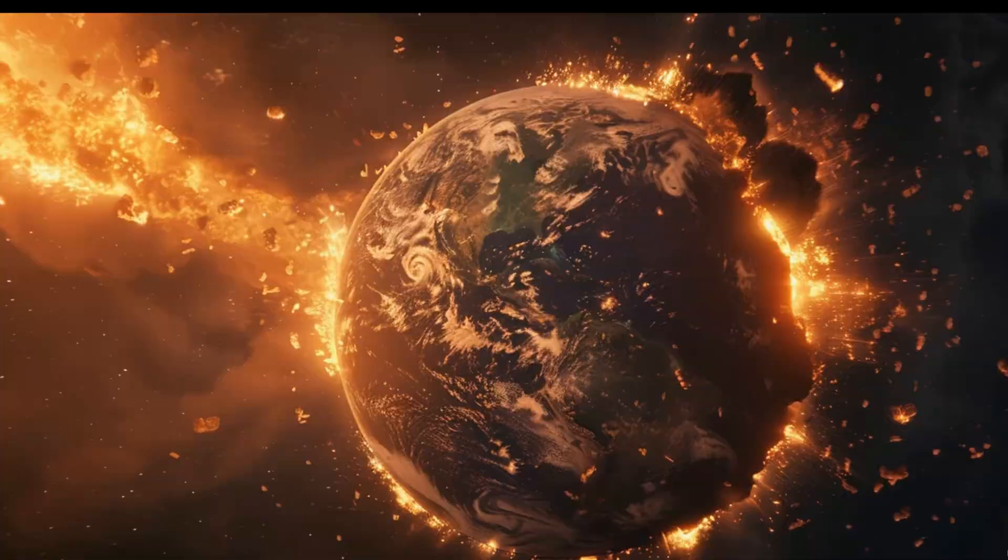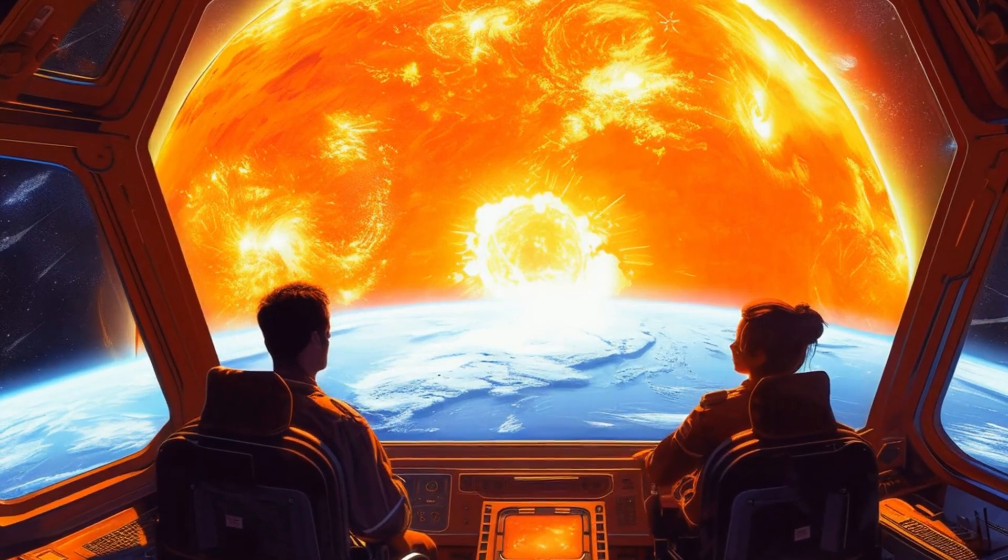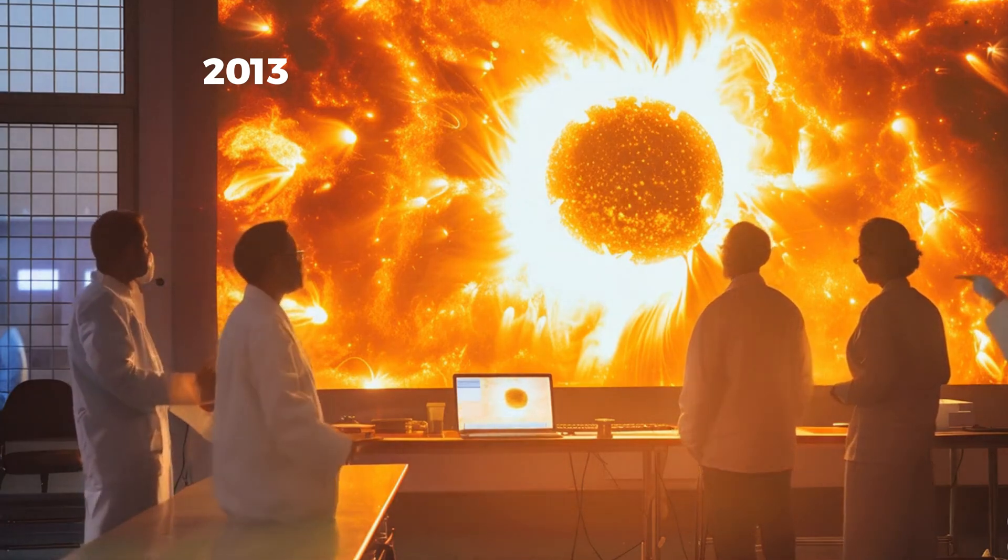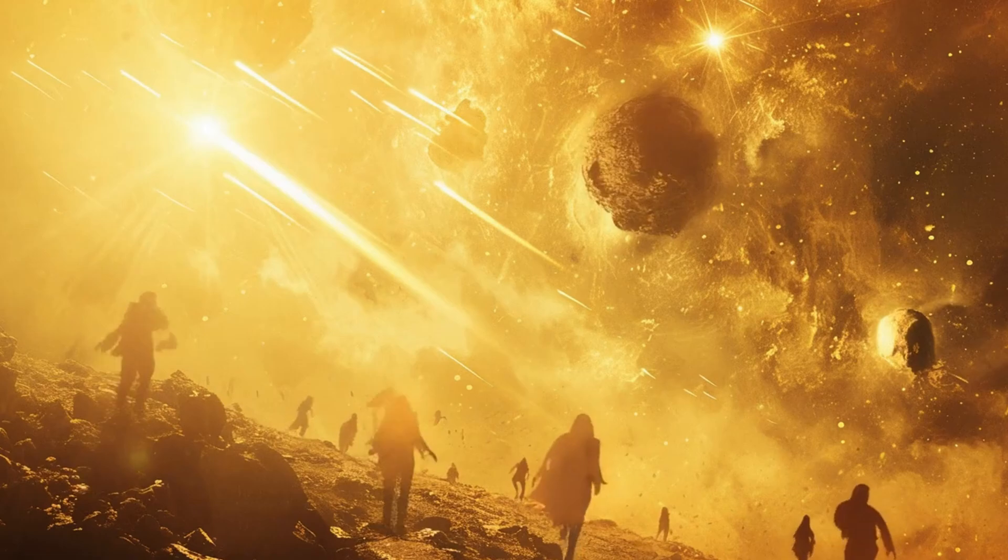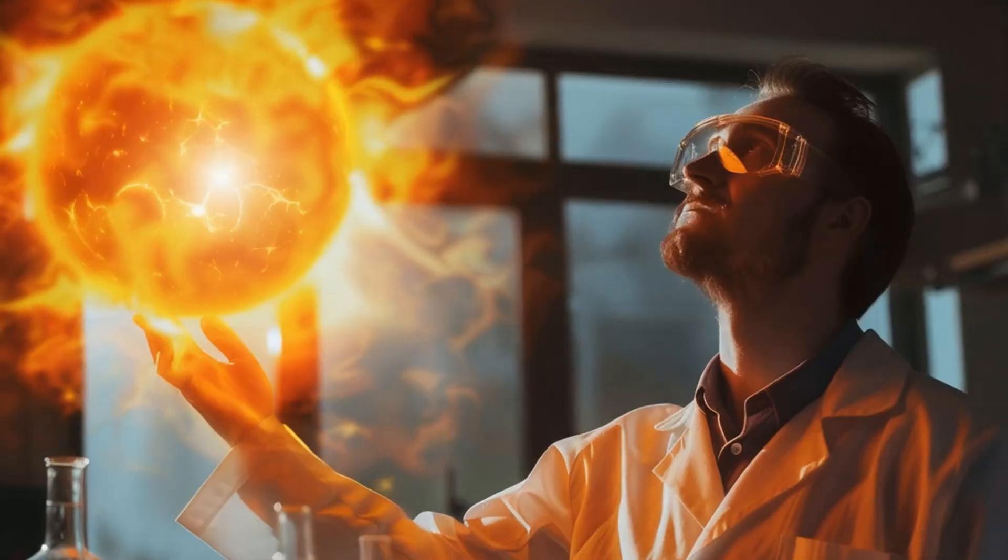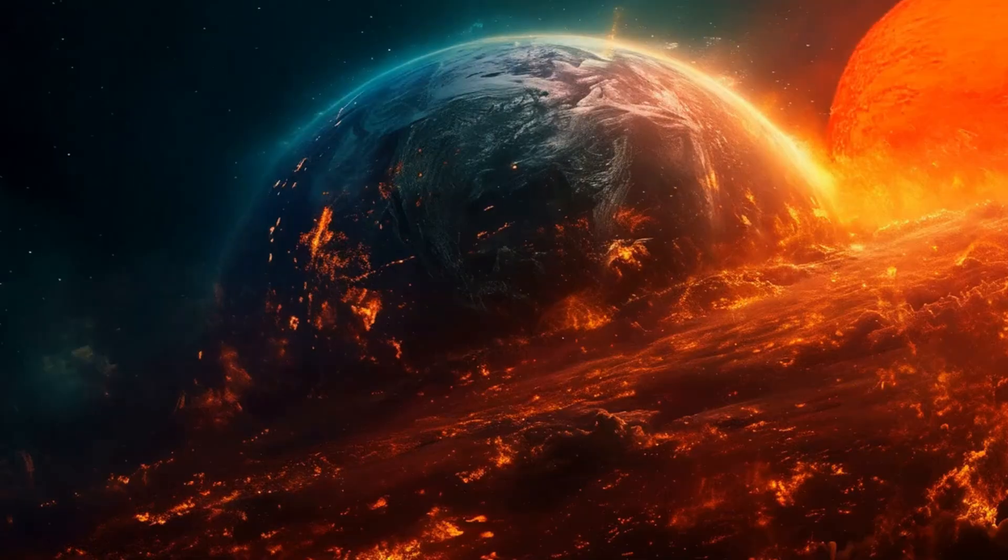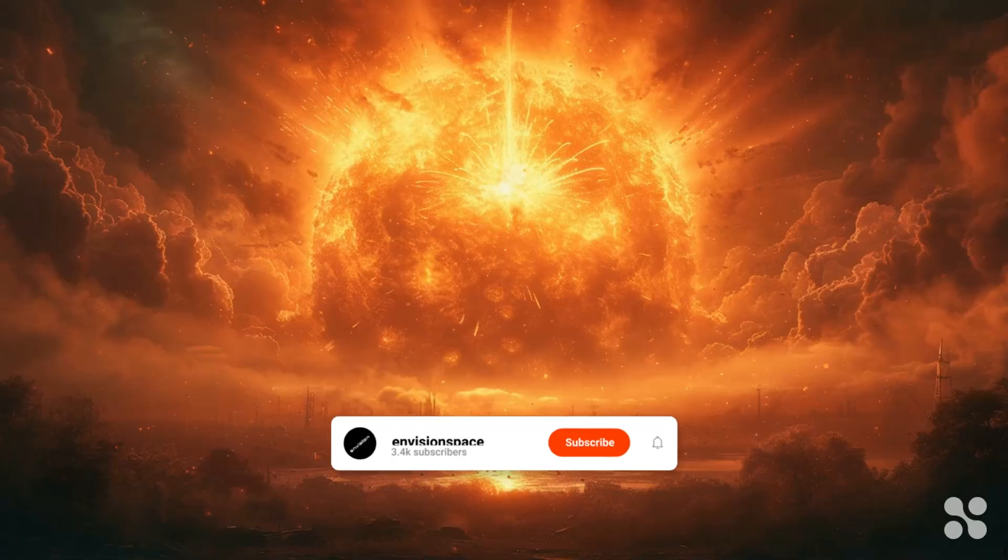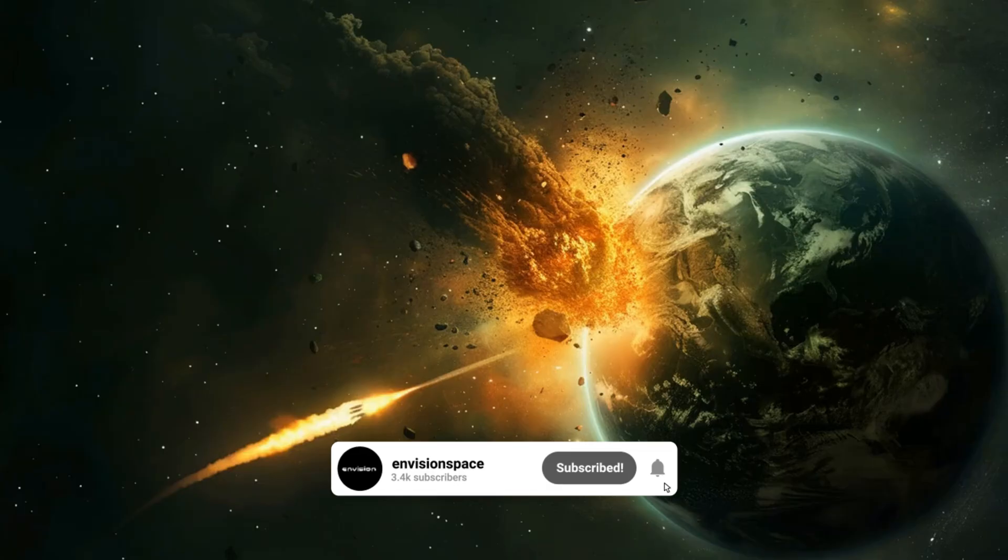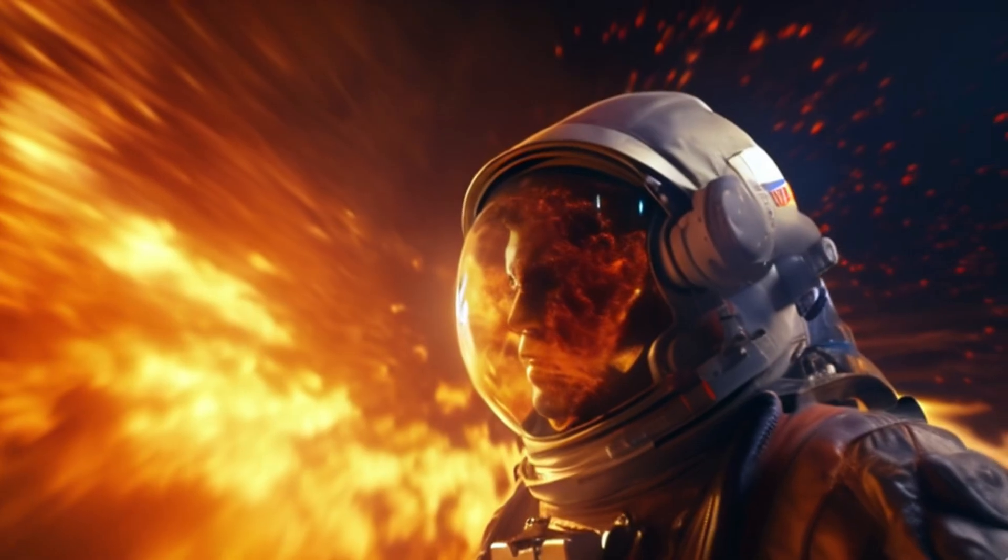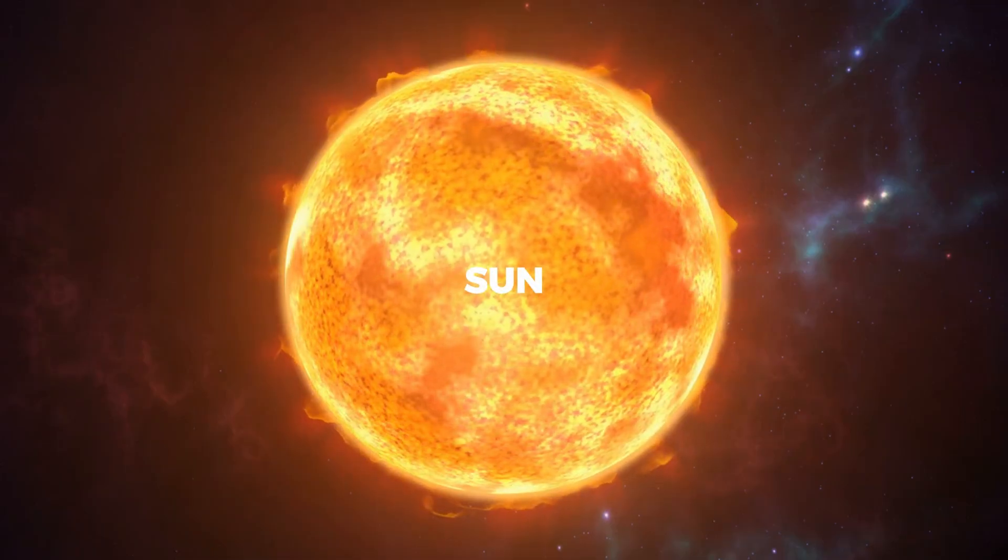When solar flares or coronal mass ejections reach Earth, they interact with the planet's magnetic field, causing geomagnetic storms. These storms can disrupt satellite communications, knock out power grids, and interfere with GPS signals, which many industries rely on for everything from navigation to timing systems in financial markets. To understand the potential danger of these solar storms, we can look at historical examples of how large solar events have affected Earth.